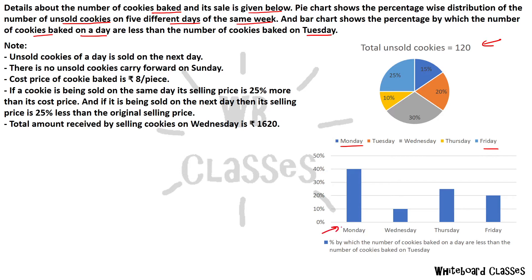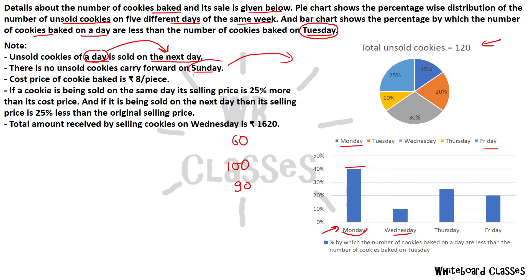So here, the number of cookies baked on a day — they are less than the number of cookies baked on Tuesday. For example, if Monday is 40% less than the number of cookies baked on Tuesday. There is a note: unsold cookies of a day are sold on the next day. There are no unsold cookies carried forward on Sunday.